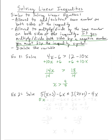5 times x is 5x, plus 5 times 3 is 15, still minus 6x is less than or equal to. Applying the distributive property again, 3 times 2x is 6x, plus 3 times 1 is 3, minus 4x. Continuing to simplify each side by combining like terms, I've got 5x minus 6x on the left hand side.